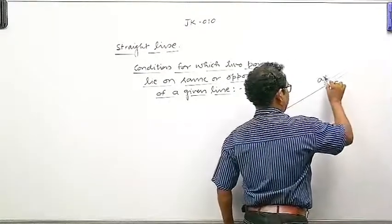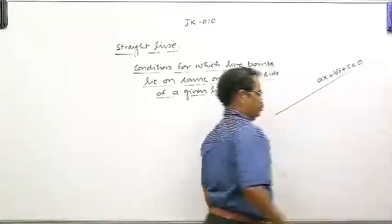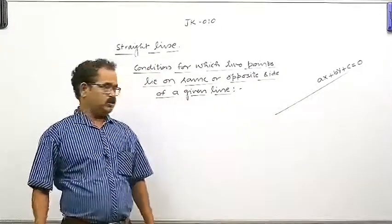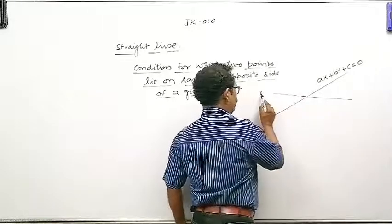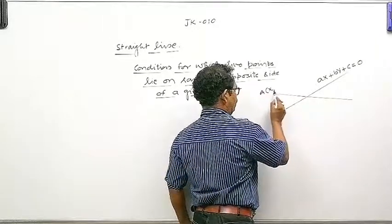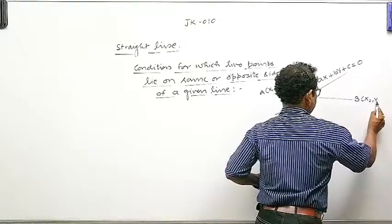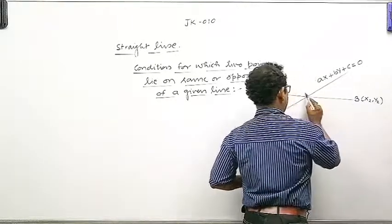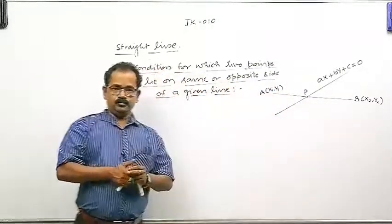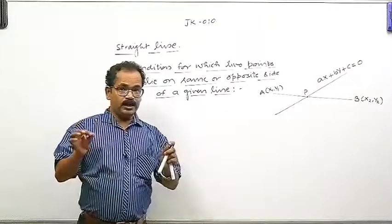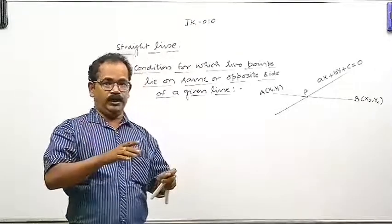मान लिया कि ये कोई line है, ax plus by plus c is equal to zero. अब ये कोई point हम ले लिया, x1, y1, और ये कोई point लिया b, x2, y2. ये कोई point हमने p मान लिया. हम जो prove करने जा रहे हैं, वो ये मान के चल रहे हैं कि both points are lying on opposite side of the line.